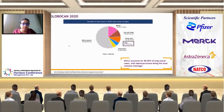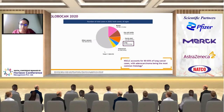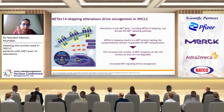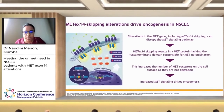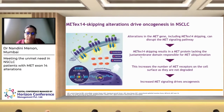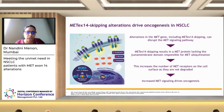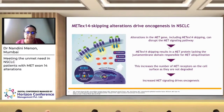This is the Globocan data on the incidence of lung cancer in the world today. Most of the cases we are seeing now is NSCLC, with adenocarcinoma as the predominant histology. Adenocarcinoma is also where you find most of the mutations, including the MET exon 14 skip alterations and MET gene mutations.